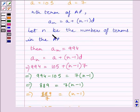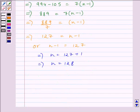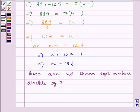We assumed that n was the number of terms in the given AP. Total terms in the given AP is equal to 128. Hence, there are 128 three-digit numbers divisible by 7. Our required answer is 128.